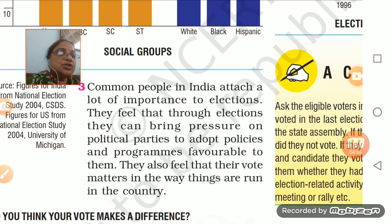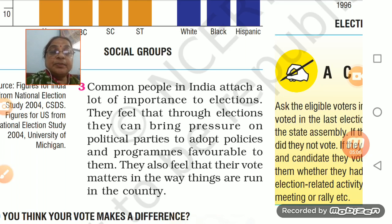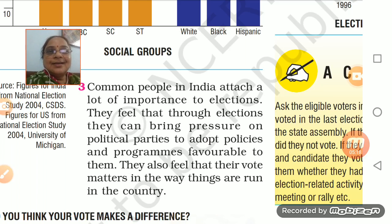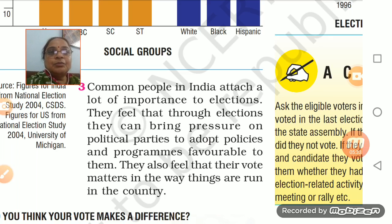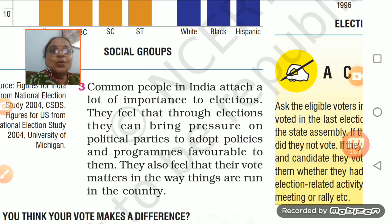The common people in India celebrate elections and feel that through elections political parties can always be kept under pressure. This is a very true thing — political parties are always scared that if they don't do anything then people will not vote in the next elections. So political parties adopt policies and programs keeping voters in mind; they don't want to annoy the voters. Political parties always take care of the voters.